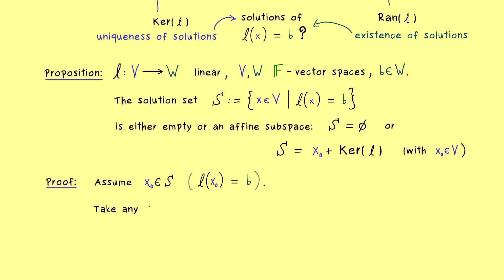And now in the next step let's take any vector v in our vector space V and then we look at the combination x₀ + v. And now what we want to show is that this new vector lies in S if and only if v comes from the kernel of l. This is not hard at all because the characterization of being in the solution set is really simple. It just means by applying l we get out b.